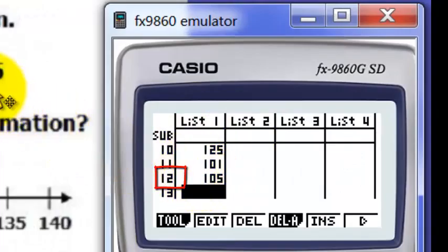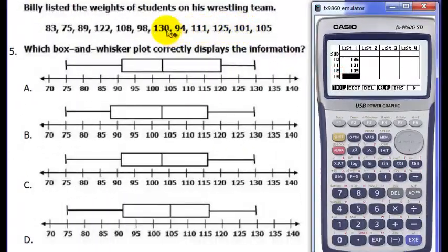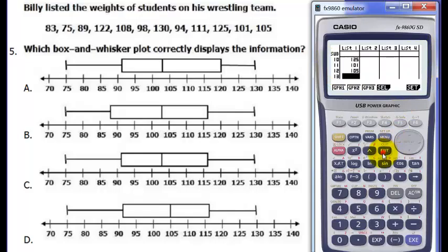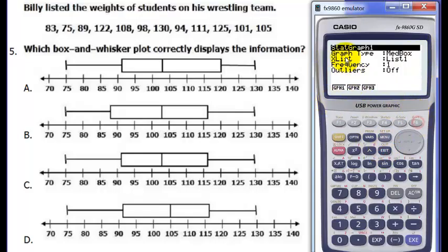Alright, so we have 12 numbers. So let's try to verify. 1, 2, 3, 4, 5, 6, 7, 8, 9, 10, 11, 12. Alright, next, I need to press graph. I don't have the graph here, so I have to press F6, graph, then graph 1, and then we have our box and whisker plot. Okay, note that earlier, we set our graph type into the box and whisker plot. We only need to do that once.